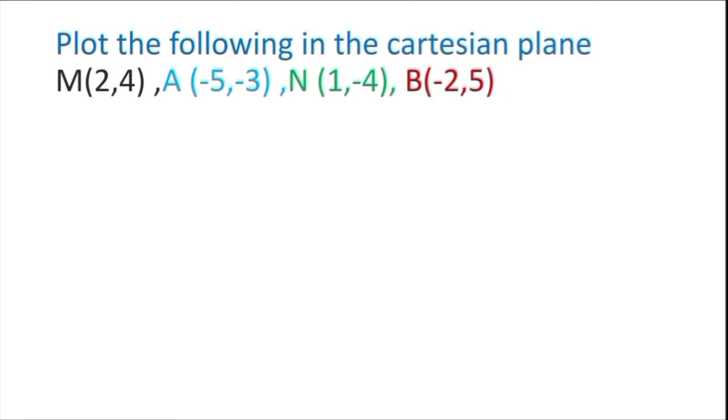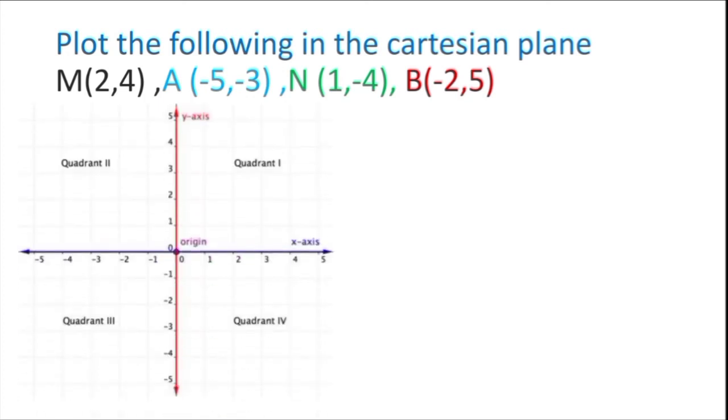Now plot the following in the Cartesian plane: M(2,4), A(-5,-3), N(1,-4), B(-2,5). Here is the Cartesian plane with 4 quadrants. First one (2,4). See X-axis 2 and Y-axis 4. Here is the M(2,4). The location of M(2,4) is here.